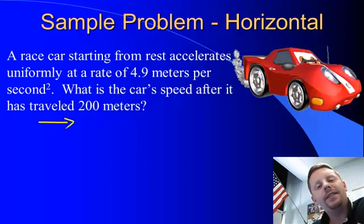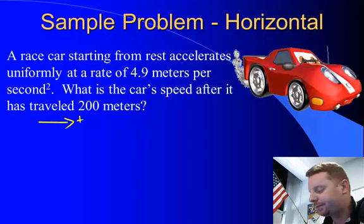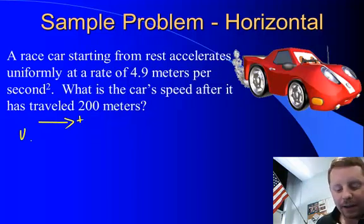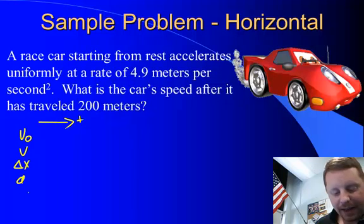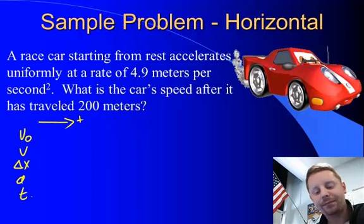And we'll call to the right the positive direction, say that it's moving that direction. So our first step then is going to be to fill in our tables. We'll start off with v-naught, v, delta x, a, and t.